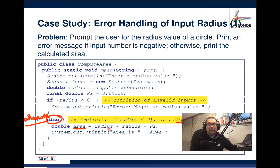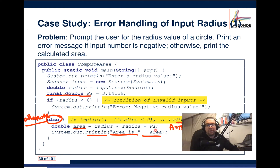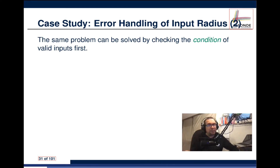We define area as radius multiplied by itself — radius squared — multiplied by the constant pi. So it's pi times r-squared, which is the area of a circle. We then print to the screen 'Area is' concatenated with the value of the area variable. The else block terminates, then the main method terminates, and finally the public class ComputeArea terminates.